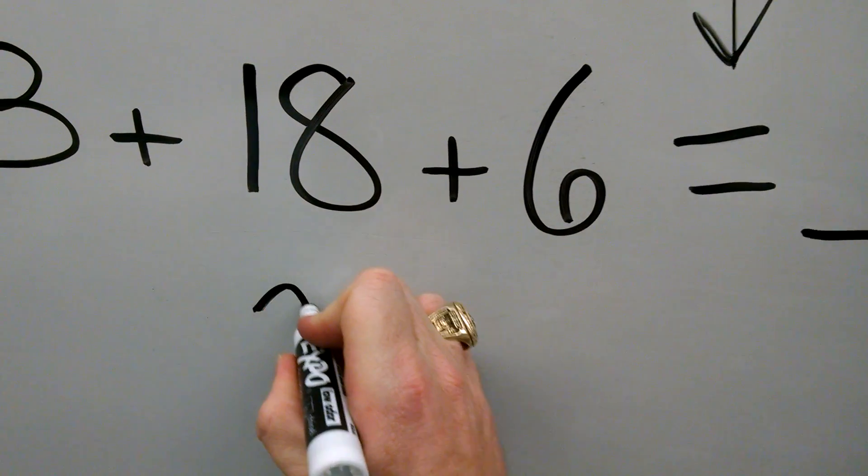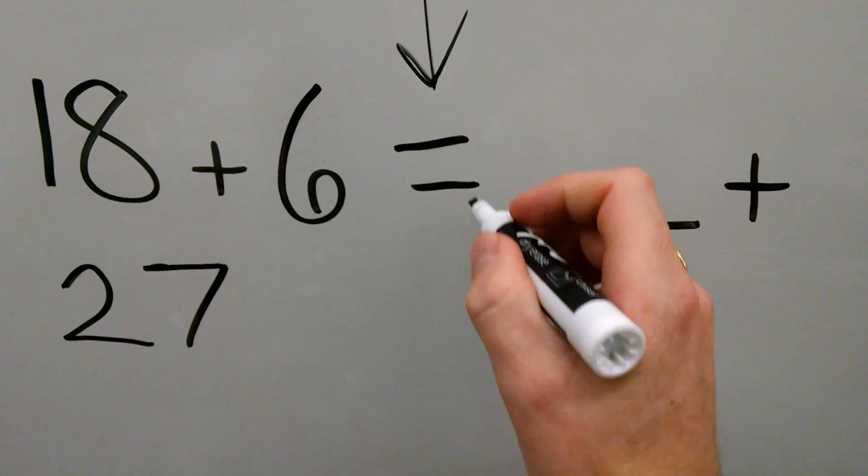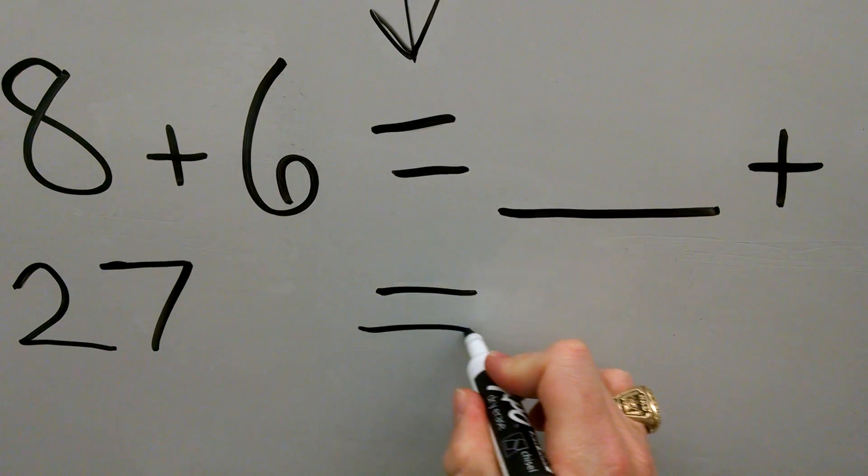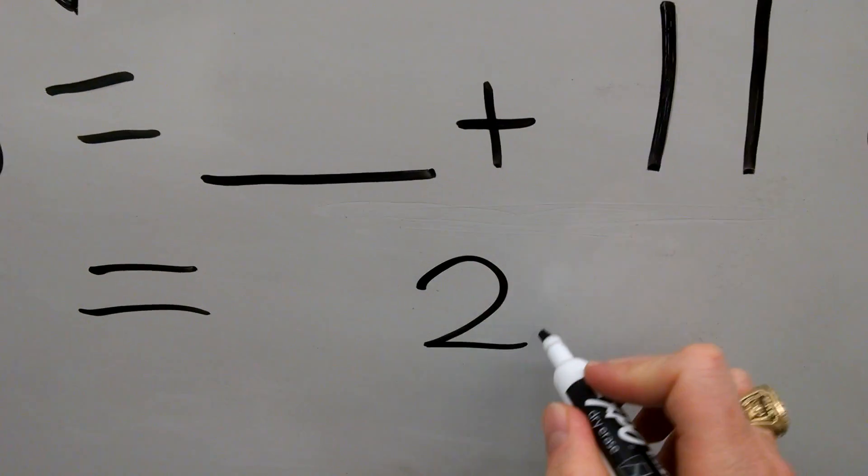So what I'm going to do is put 27 right underneath that. Then we're going to bring our equal sign down here, and this side is going to have to equal 27 also.